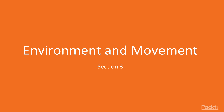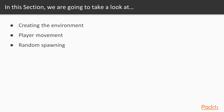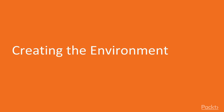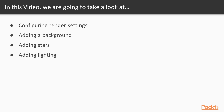Welcome back to section 3, Environment and Movement. Within this section, we will learn how to create the environment using background elements, how to add player movement with both horizontal and vertical limits, and lastly how to add random spawning and movement of the asteroids in our game. In this video, we are going to go over creating an environment for our game within Blender. We will learn how to configure the render settings, how to add a background and stars, and how to add lighting to our scene.